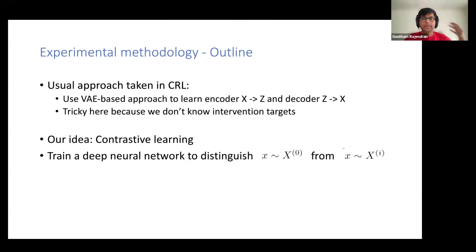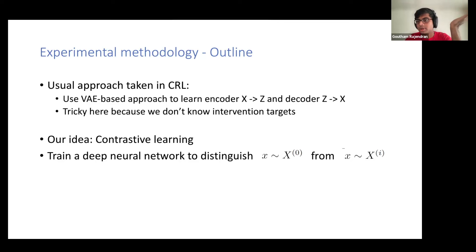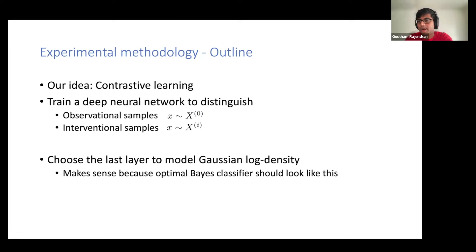We wanted to come up with something different to add to the area of available techniques. We use a very simple idea prevalent in machine learning: contrastive learning. The idea is simple — you just want to train a network to distinguish samples. Given a sample, it's the model's job to tell me if it's coming from the observational dataset X0 or an interventional dataset X_i. Just train a model — I don't care about reconstruction or ELBO loss. The key change in architecture is the last layer, which must model the Gaussian log density.